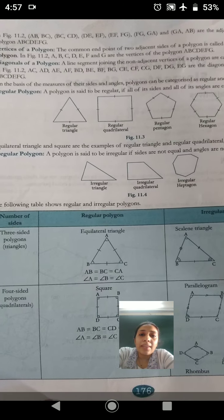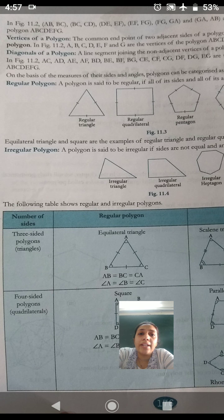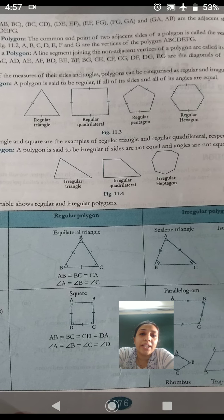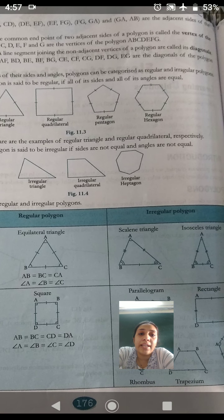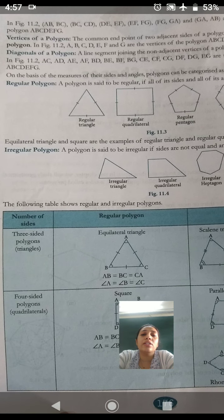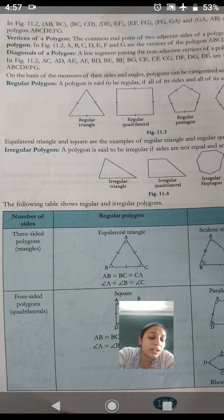It's given over here that in figure 11.2, AC, AD, AE, AF, BD, BE, BF, BG, CF, CE, CG, DF, DG, EG are the diagonals of the polygon ABCDEFG. What is the name of this polygon? ABCDEFG, right?